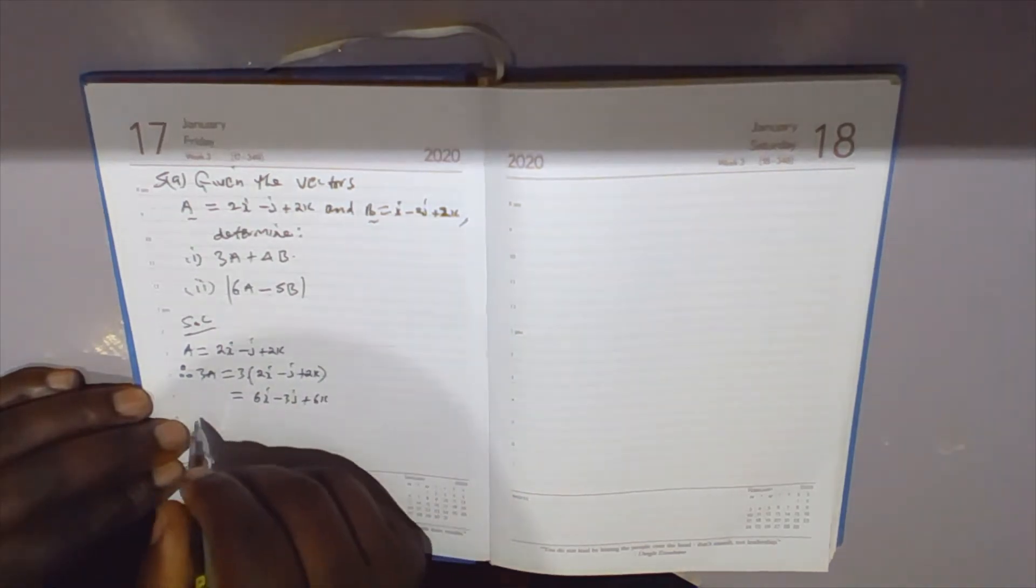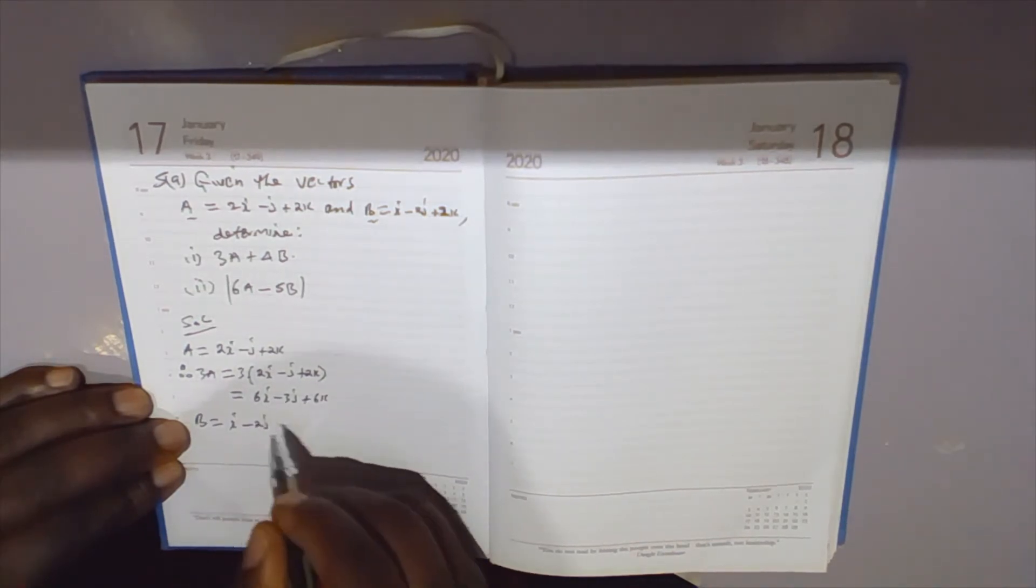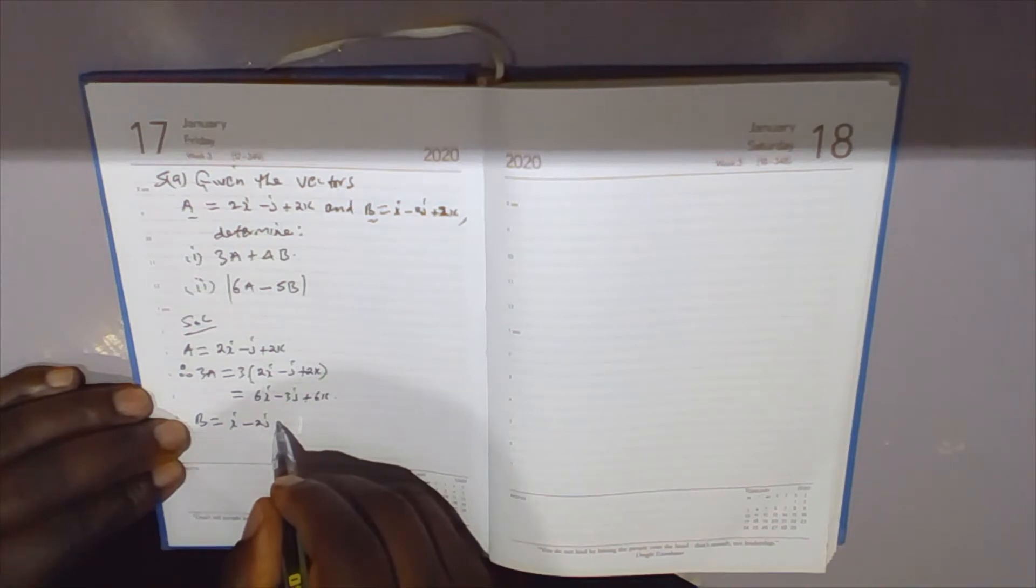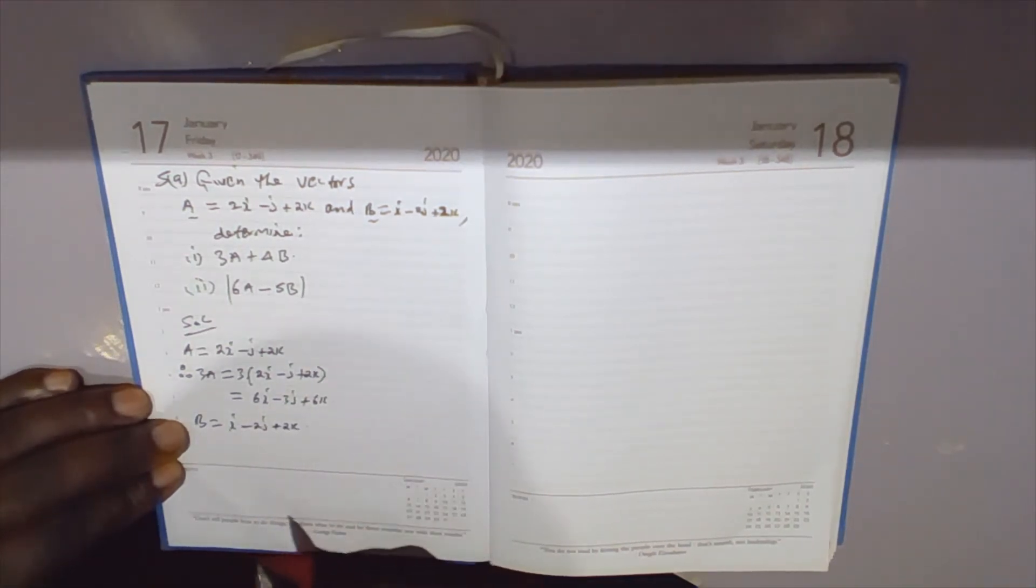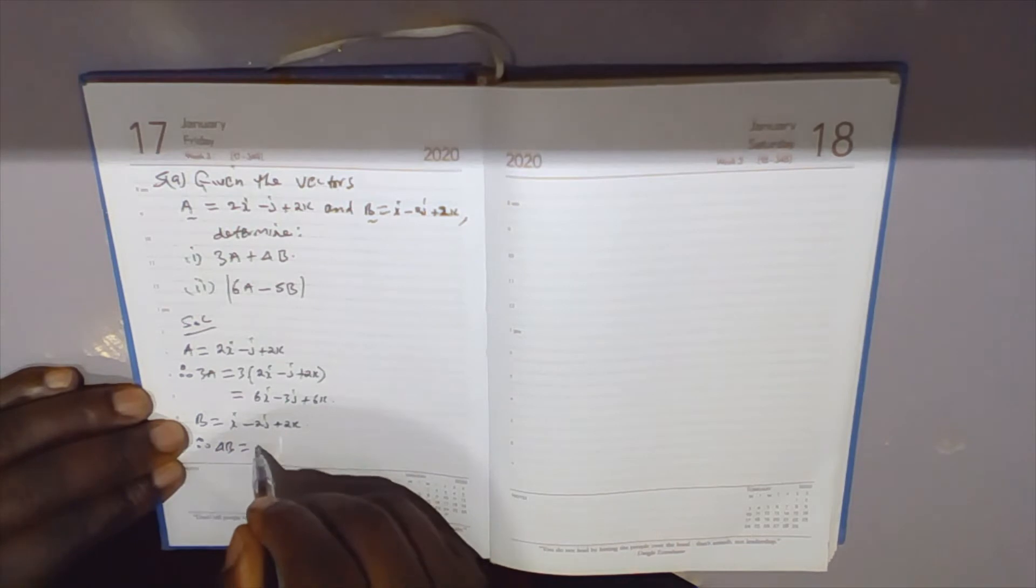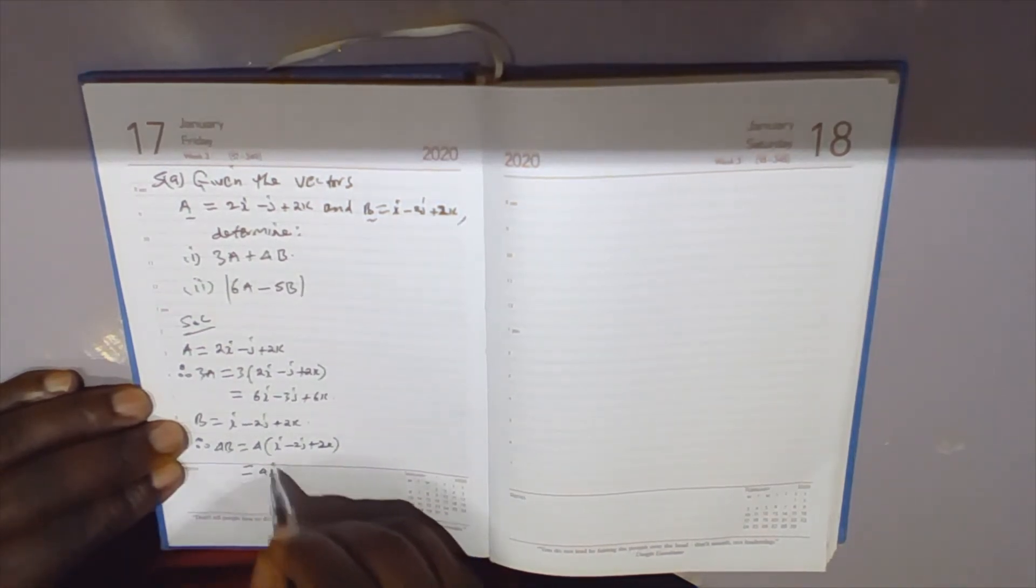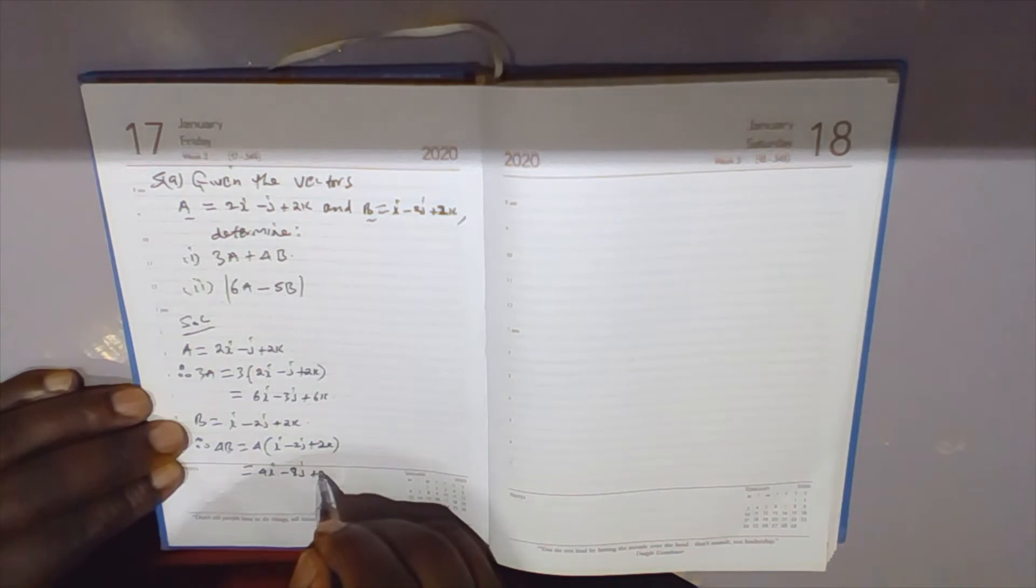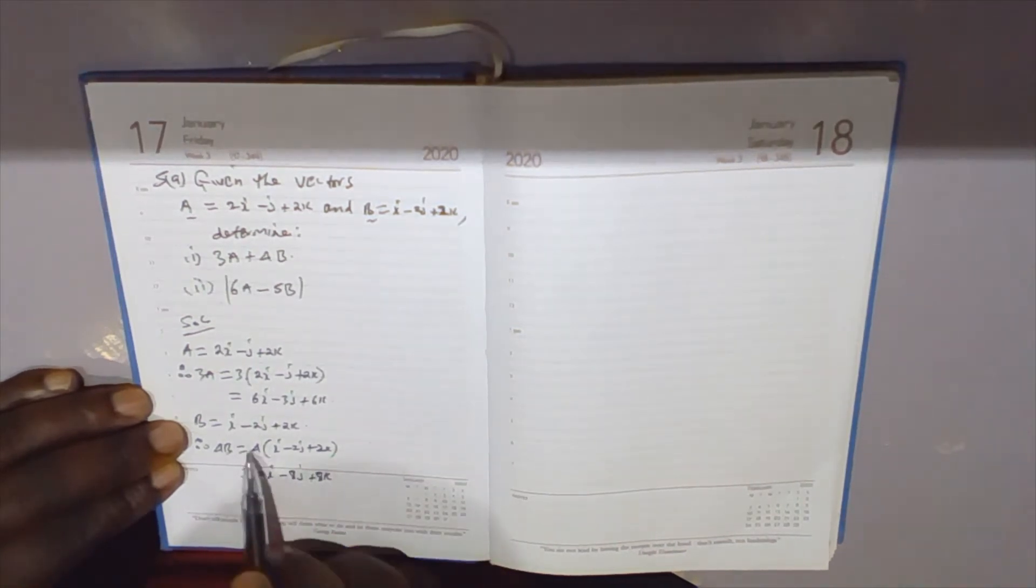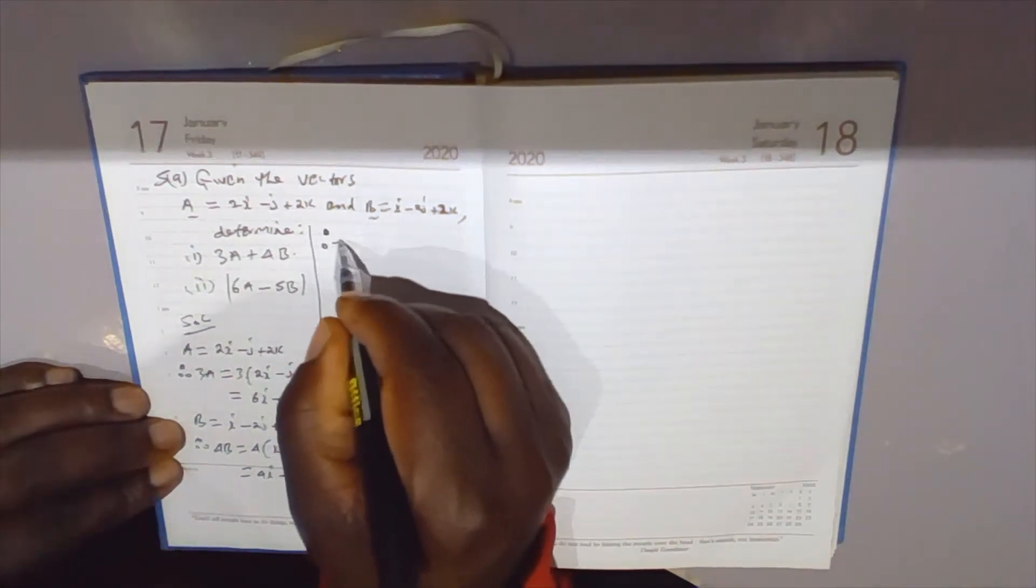Vector b is given by i - 2j + 2k. Therefore, 4b equals 4 times (i - 2j + 2k), which equals 4i minus 8j plus 8k.